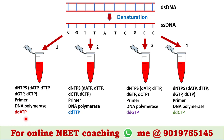The ddNTPs are added in very low concentration. In tube 1, ddATP is added. In tube 2, ddTTP is added. In tube 3, ddGTP is added. In tube 4, ddCTP is added. These ddNTPs are radio-labeled.